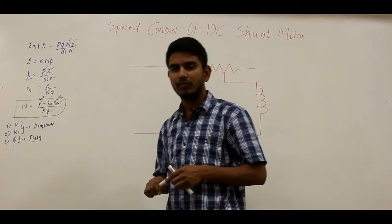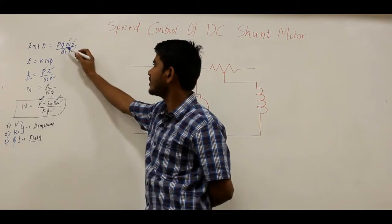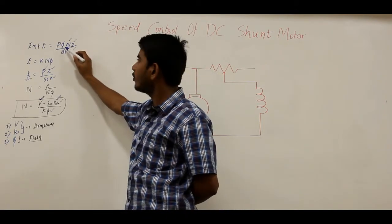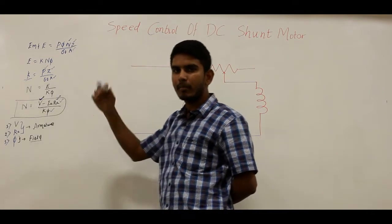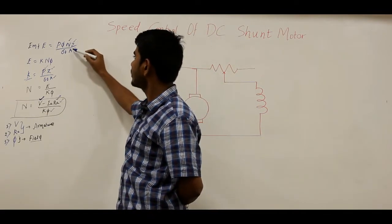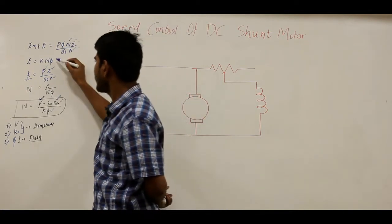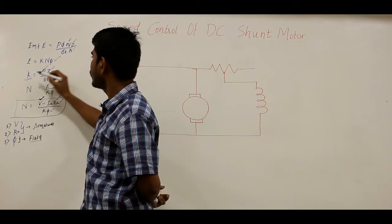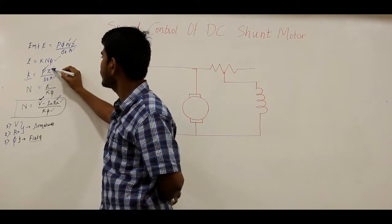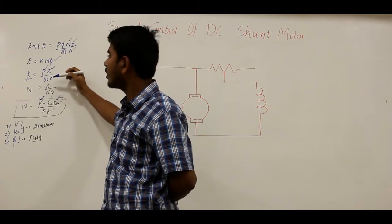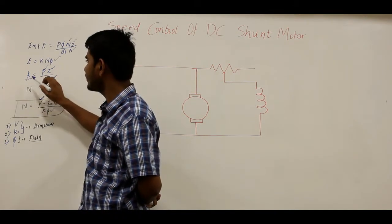If we write the EMF equation of a DC motor: EMF = PΦN Z / 60A, where P is the number of poles, Φ is flux per pole, N is the speed of rotation in RPM, Z is the total number of armature conductors, and A is the number of parallel paths. Rewriting this as E = K·NΦ, where K = PZ / 60A, since P, Z, and A are fixed quantities represented by the constant K.